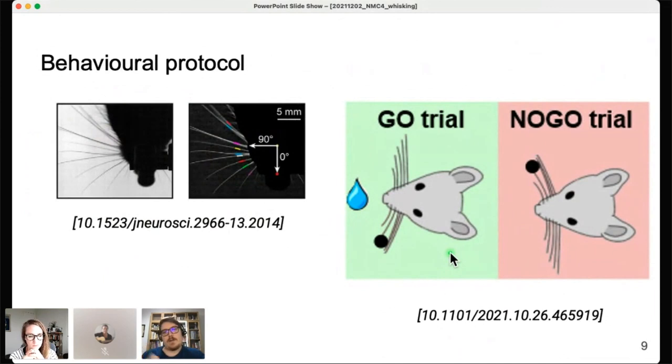We also added a cerebellar model, a simple model to have the learning capabilities, because we took inspiration from this experimental paper where they tested the effect of cerebellum on a learning task which involved object localization through whisking. The protocol is kind of simple: there is an object that is placed in the left or in the right whisking field of the mouse. In go trials, it's placed on the left and there is a reward, so the mouse licks and there is water as a reward. During no-go trials, the bar is placed on the right whisker field and there isn't a reward.